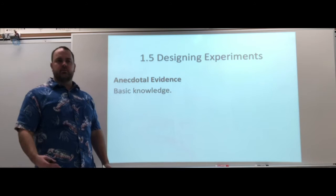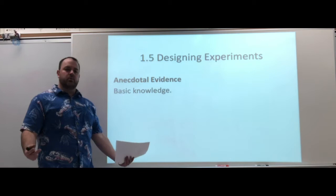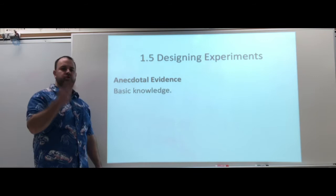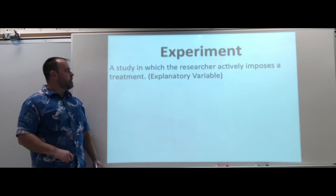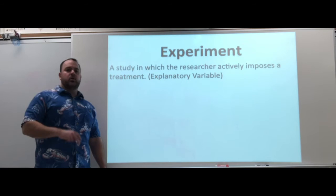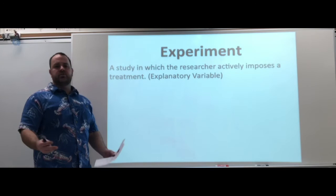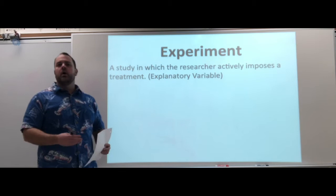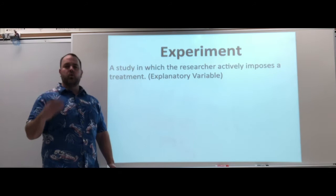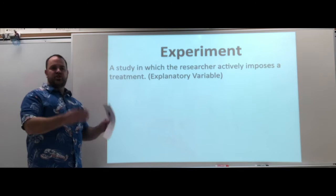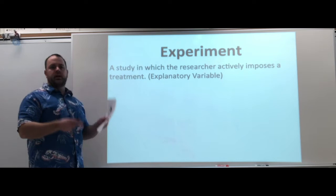Now we're going to look at some things you can do to control outside factors. We weren't controlling how athletic those two students were to begin with — we wanted to focus on just the training program. An experiment is a study in which the researcher actively imposes a treatment on observational units. It's not always a physical treatment; it could be putting them in a different environment or changing how a question is asked. Those things I'm not doing are going to be controlled as much as possible, so we know it's the explanatory variable causing the response.